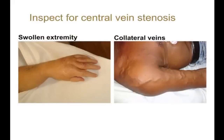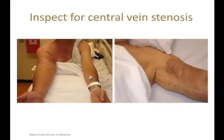Inspection for central vein stenosis. Central vein stenosis is seen in patients who have received multiple central vein catheters or have endovascular leads from a cardiac rhythm device. It leads to swelling of the entire extremity, as seen in the picture on the left, and development of collateral veins along the pectoral and shoulder regions, as seen in the picture on the right. The picture on the left shows the swollen right upper extremity compared to the left, and the picture on the right shows collateral veins in the axillary and pectoral regions in a patient with a transposed basilic vein fistula.